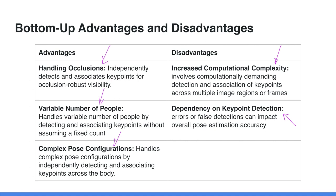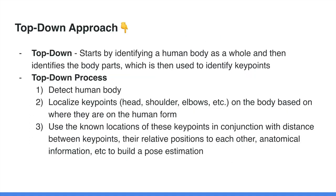The top-down approach detects the whole human form, then locates body parts, then localizes key points based on their position within the human form. It uses the known locations of key points in conjunction with factors like distance between key points, relative positions, and anatomical information to build a pose estimation. The overall goal is to figure out where humans are and in what configuration their body parts are — important in a rescue situation where someone may be trapped with a broken arm or their body in an unusual position.